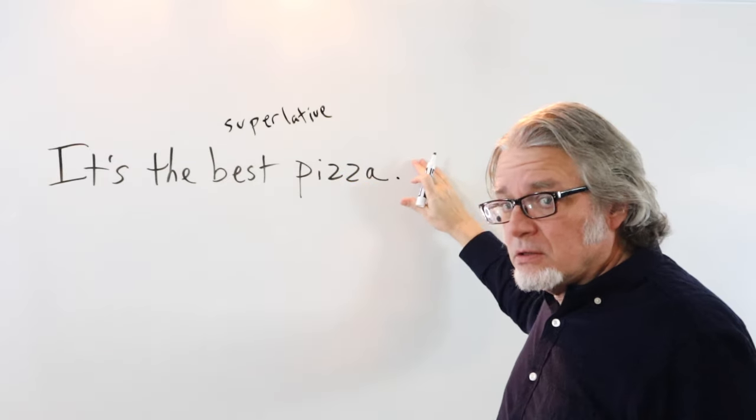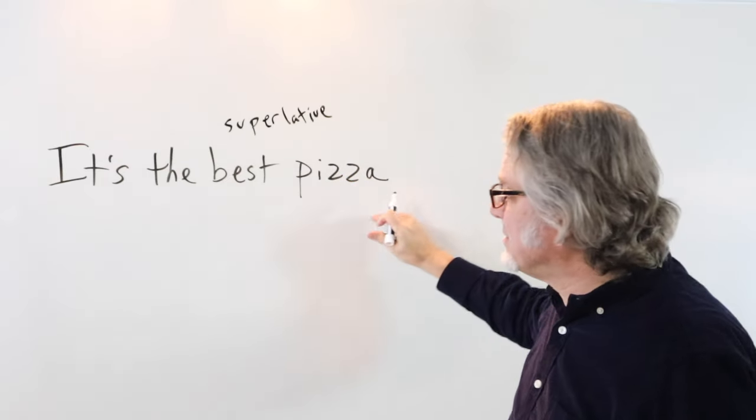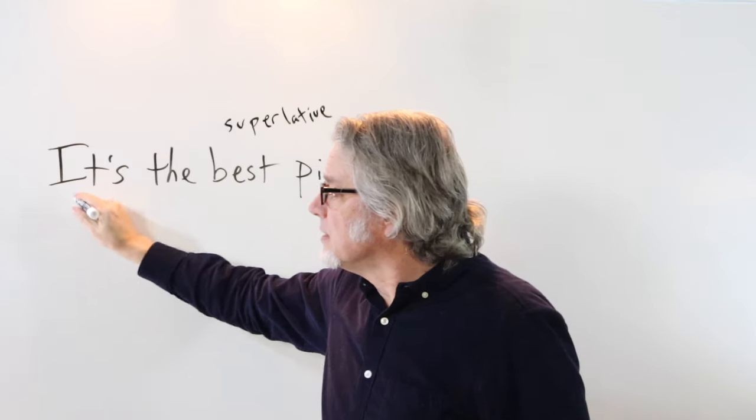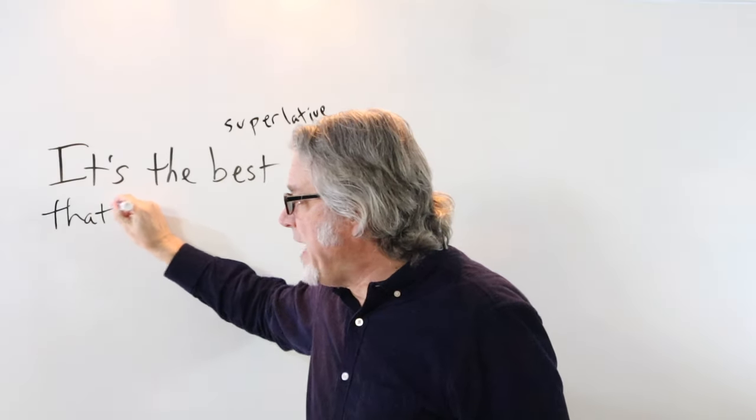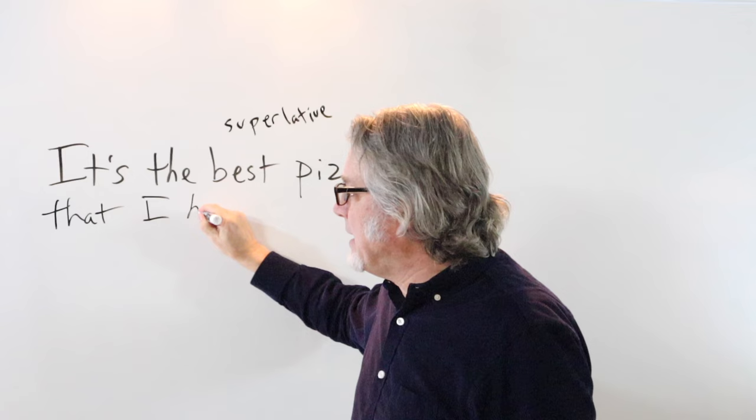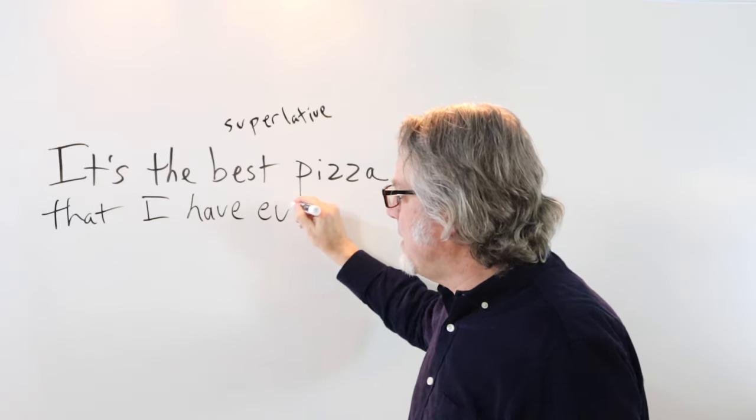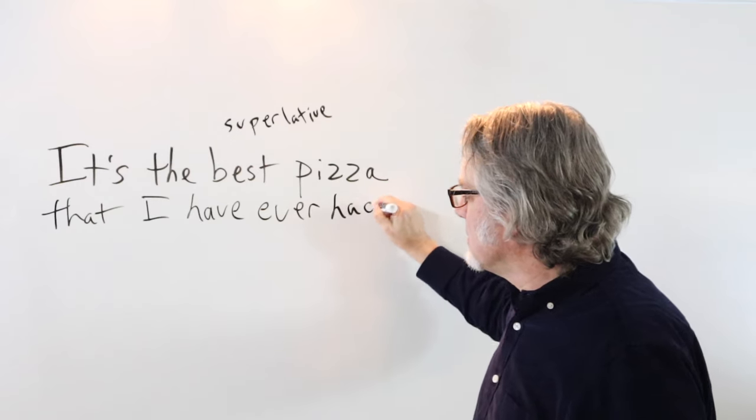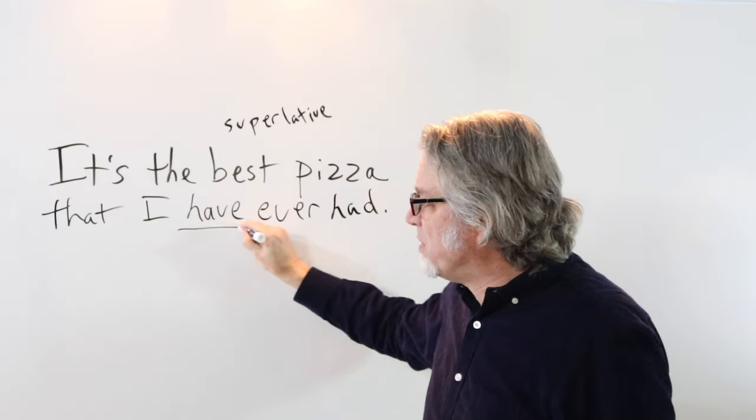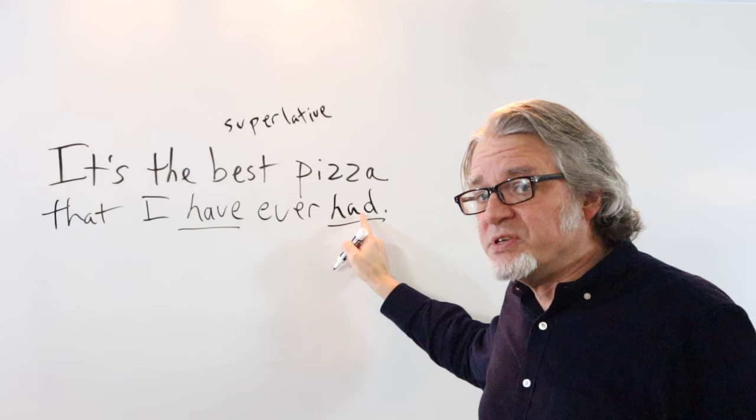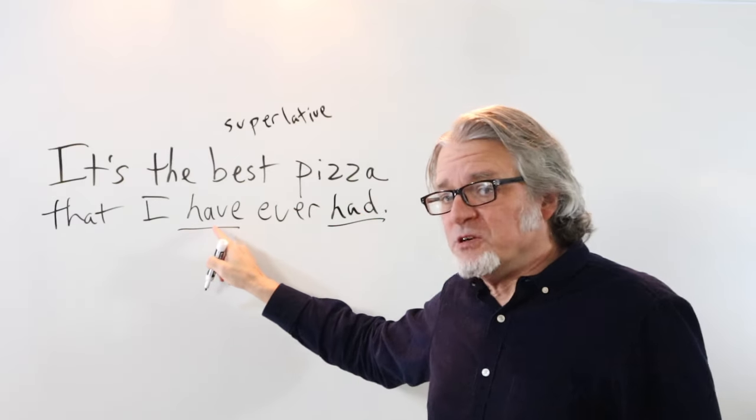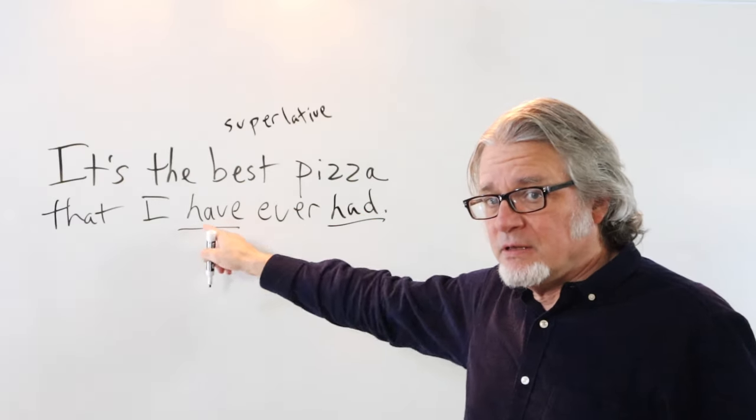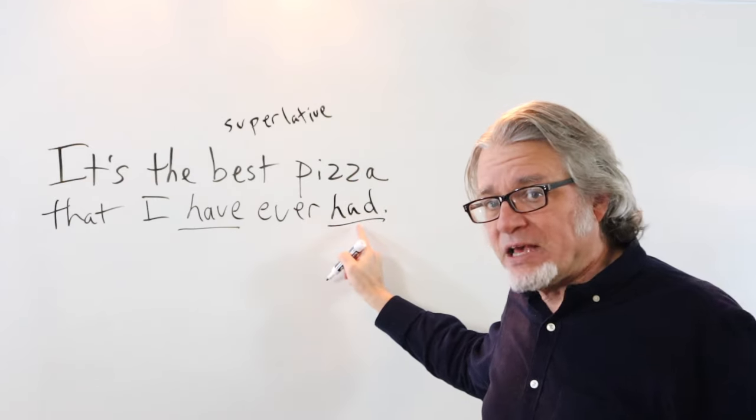After pizza, you could add on to this: that I have ever had. Here's the present perfect tense. The main verb is have. The helping verb is also have, but this is in the form of a past participle.